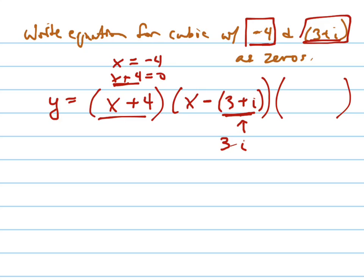So this would be 3 minus i, is also a zero. So it's x minus 3 minus i. Now, that is the answer. And if they didn't tell you to write it in standard form, you would be done.